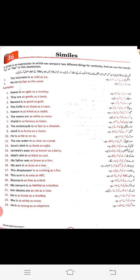'Jamil is as funny as a clown,' 'he is as strong as an ox,' 'the sea water is as clean as crystal,' 'Sana's shirt is as black as night,' 'Jamil's eyes are as brown as a berry,' 'Abit's skin is as black as coal,' 'my father was as brave as a lion.' You can see there is comparison between two unlike, different things — this comparison is called a simile.